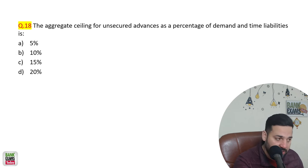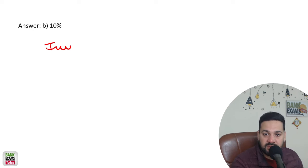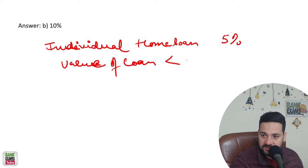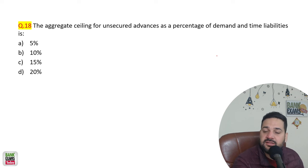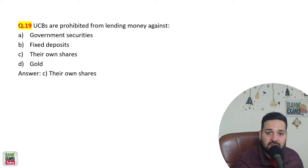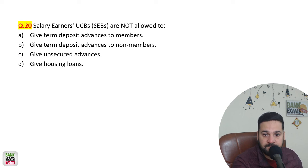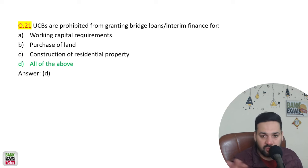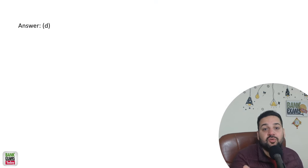There is an additional 5 percent allowed for individual housing loans where the value of the loan is less than ₹25 lakh. The aggregate ceiling for unsecured advances as a percentage of demand and time liabilities is 10 percent — UCBs can only give that much. UCBs are prohibited from lending money against their own shares. Salary earner UCBs are not allowed to give term deposit advances to non-members. UCBs are prohibited from granting bridge loans and interim finance, and UCBs cannot give loans to their own directors.